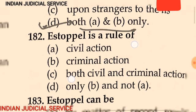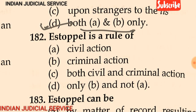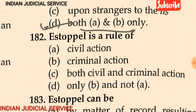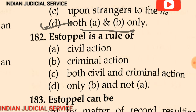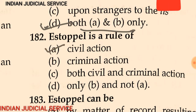Question 182: Estoppel is a rule of — (A) civil action, (B) criminal action, (C) both civil and criminal action, (D) only B not A. The answer is that estoppel is a rule of civil action.